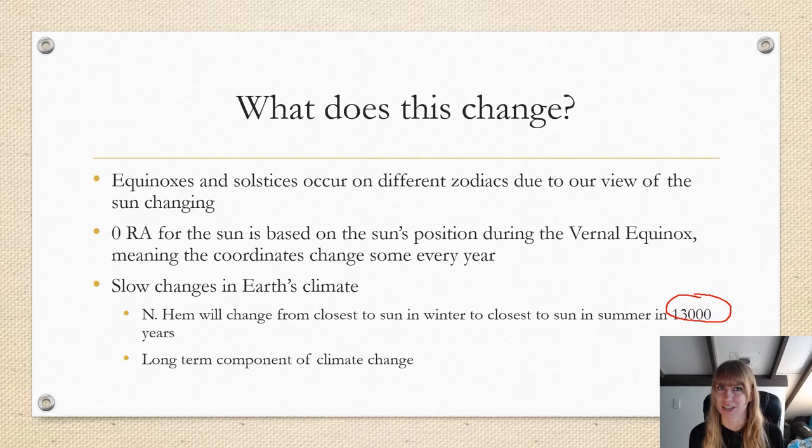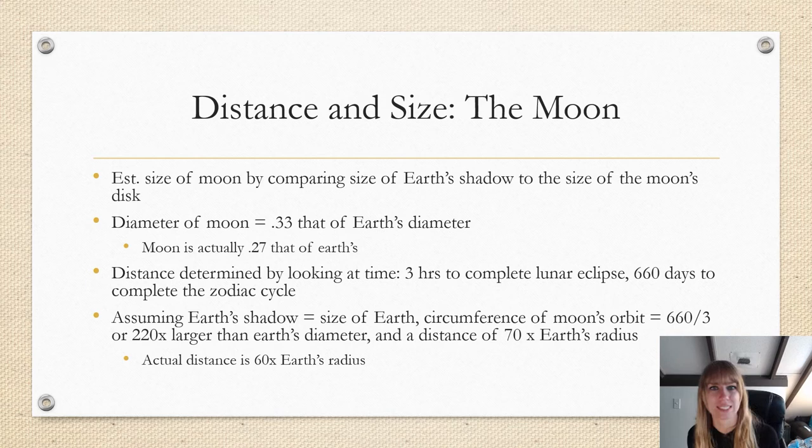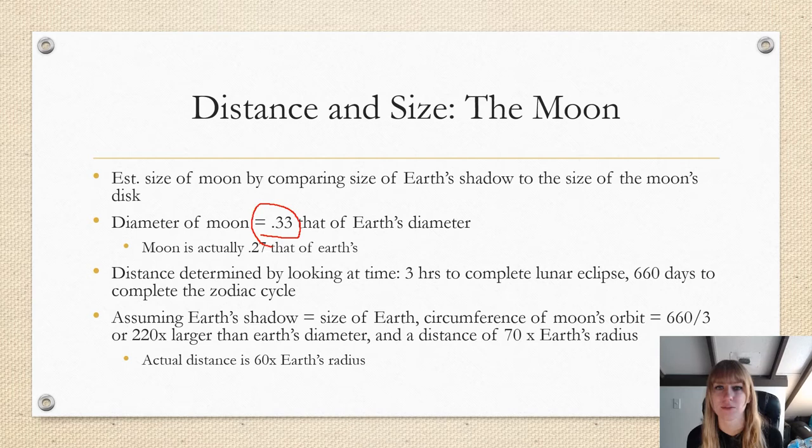What about the distance and size for the moon? So Aristarchus, another astronomer or ancient scientist, estimated that the size of the moon by comparing the size of Earth's shadow on the moon during a lunar eclipse to the size of the moon's disk. He determined that the moon's diameter was actually 0.33 that of Earth's diameter, or about one-third, and he was actually quite close. The moon is actually 0.27 that of Earth.